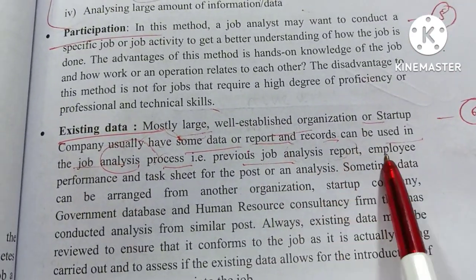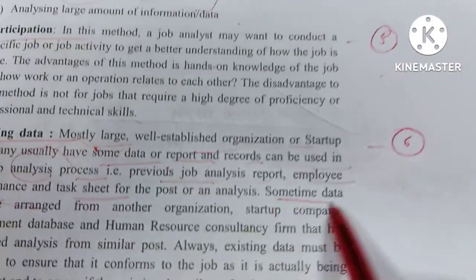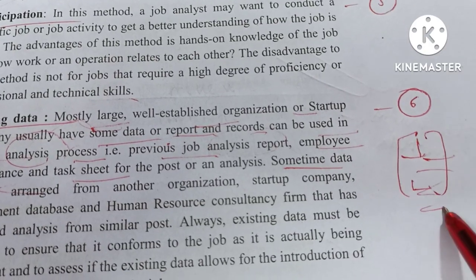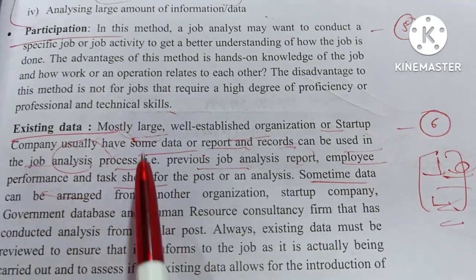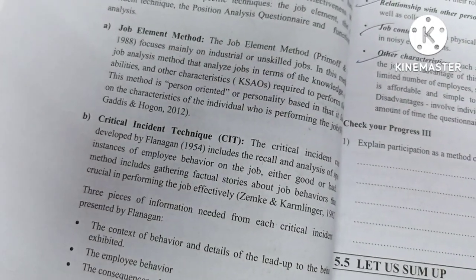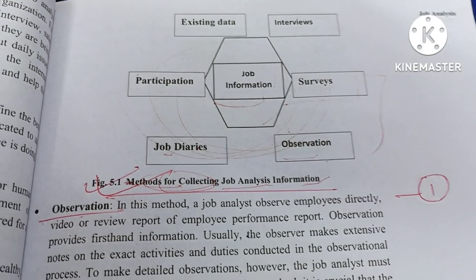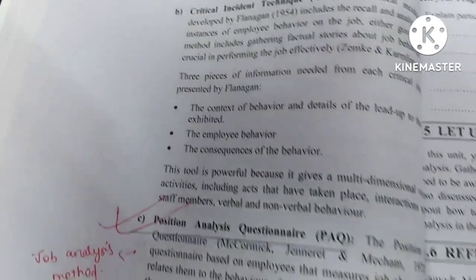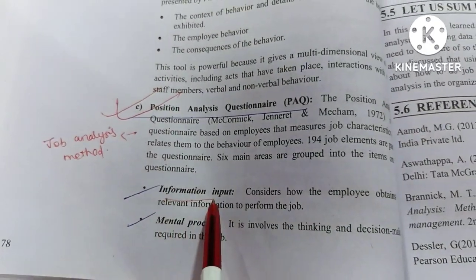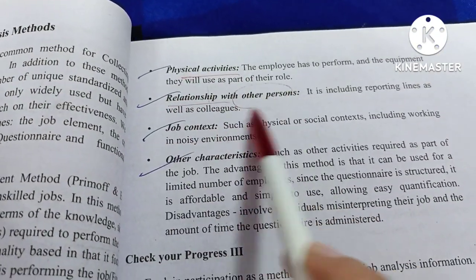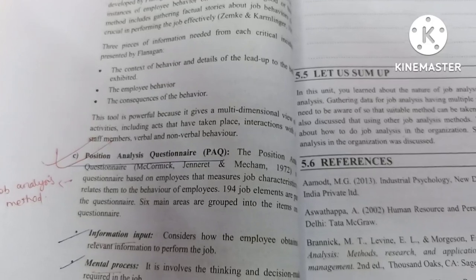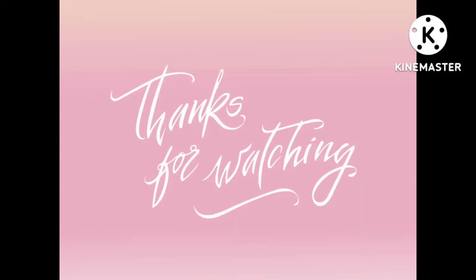Now there are job analysis reports and performance or task information. My dear viewers, this topic is over here. You have to remember the methods for collecting job analysis information from this chart and then explain them in detail in the exam. The last topic is the Position Analysis Questionnaire, which includes input information, mental process, physical activities, relationship with other persons, job context, and other characteristics. We will see you in the next video — thank you so much.